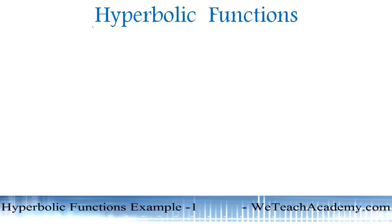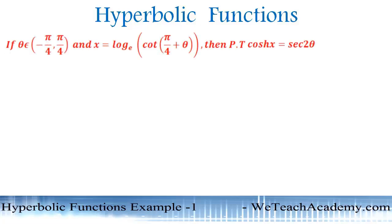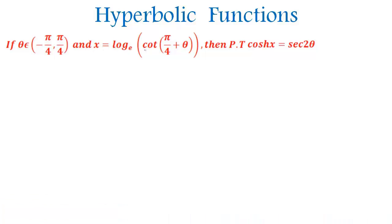Hello, in this video we are going to solve an example under the concept of hyperbolic functions. If theta belongs to minus pi by 4 comma pi by 4, and x is equal to log cot of pi by 4 plus theta to the base e, then prove that the value of hyperbolic cos x is equal to secant 2 theta.